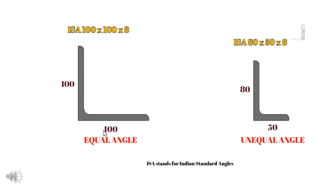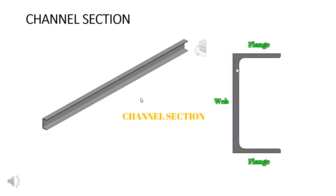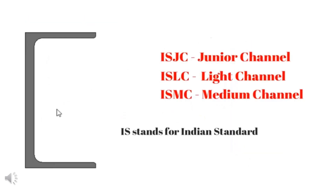Next is the channel section. Looking at the figure of the channel sections, there is a cross-sectional view showing a C-shape. In this cross-section, there is a vertical portion called the web and horizontal portions called flanges. The web and flanges are perpendicular to each other.